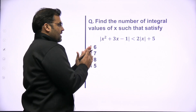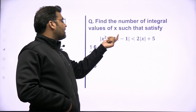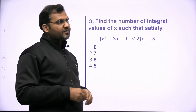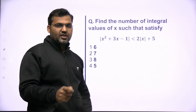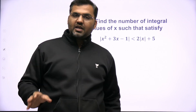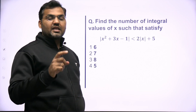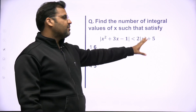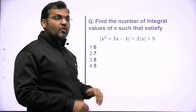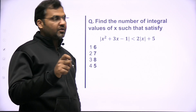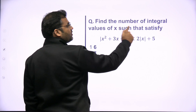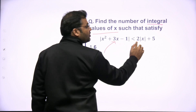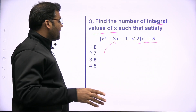The question is: find the number of integral values of x such that they satisfy mod of x squared plus 3x minus 1, less than 2 times of mod of x plus 5. You need to understand the question first. The first step in any quantitative aptitude question is to understand it. It says: find those integral values of x for which this quadratic expression with a mod sign is lesser than 2 times mod of x plus 5.